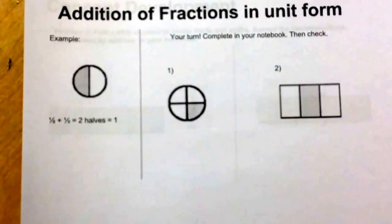There are two equal parts in the circle. The fraction that's shaded is a half. So a half plus a half is two halves or one.